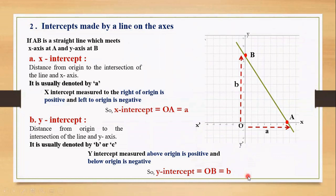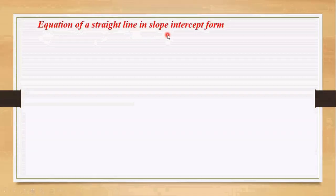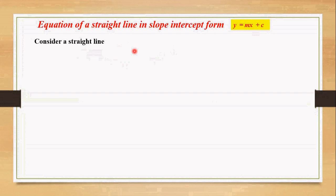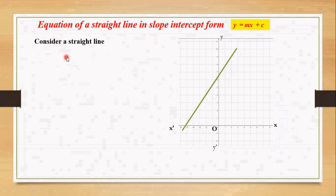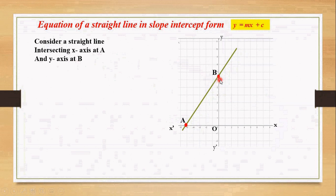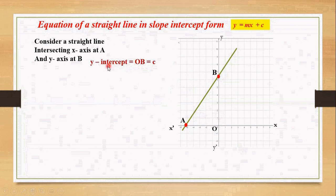Now we are going to use these two definitions in our derivation. Derivation of the equation of a straight line in slope-intercept form, that is y equals to mx plus c. Consider a straight line on the coordinate axis intersecting the x-axis at A and the y-axis at B. Here y-intercept is OB, the distance from origin to B. Let us denote it by c.